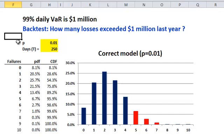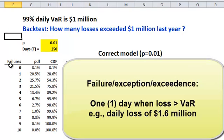Now for the backtest, we go back, look over the year, and actually see how many exceedances we had, or failures, or we could also call it exceptions. So we can call them failures, exceptions, or exceedances.